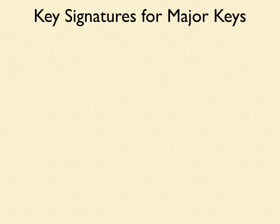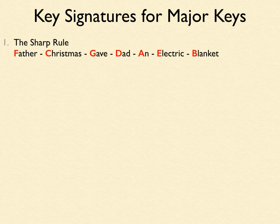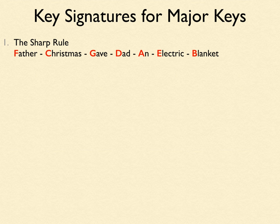The first thing I'd like to look at is the sharp rule. This rule will help you find the accidentals to any major key that uses sharps — all the scales and key signatures that use sharps. The sharp rule looks like this: "Father Christmas Gave Dad An Electric Blanket." You can use any sentence you like, just as long as it uses those letters in that order: F, C, G, D, A, E, and B. Anything you can think of will help you find all the accidentals to major keys and scales that use sharps.